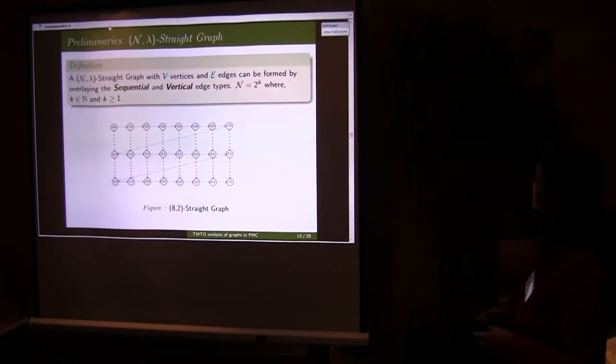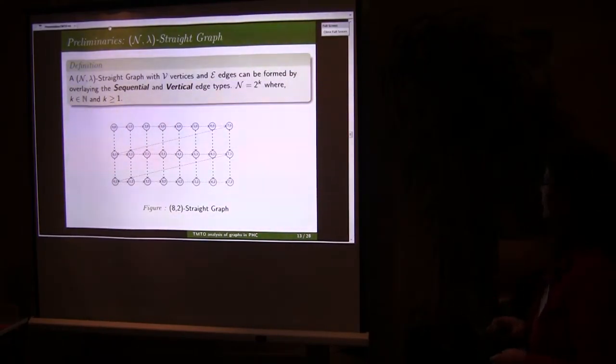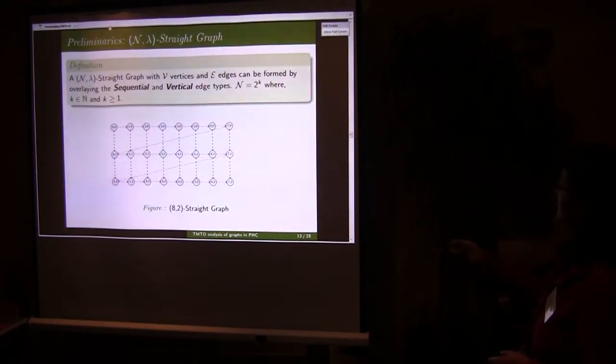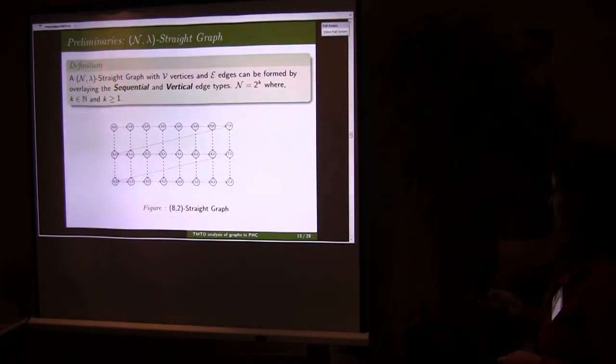Next we define the straight graph. Straight graph is the overlapping of sequential and vertical graph. This is sequential, this is vertical. And now this straight graph is having both the relations, sequential as well as vertical. So we call it straight graph.